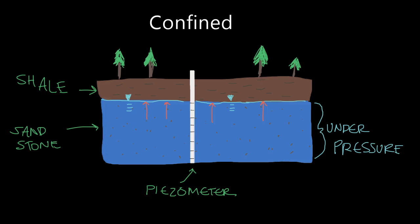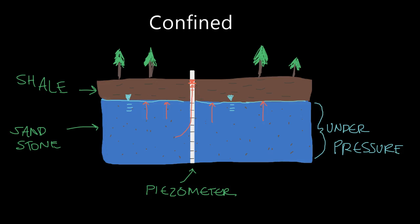Now what is our potentiometric surface going to look like? Is it going to be at the water table, or is it going to be higher because the water is under pressure? It's going to be higher — because the pressure of the water in this confined aquifer is going to force it to rise up in this well, maybe right there. There's pressure in the aquifer acting on the confining bed, and so when we puncture this aquifer with a piezometer or well, that water is under so much pressure that it rises higher than that contact between the two units. The contact between those two units defines our water table, but the water can rise into the well — so therefore, our water table and our potentiometric surface are different because of the pressure in the confined aquifer.